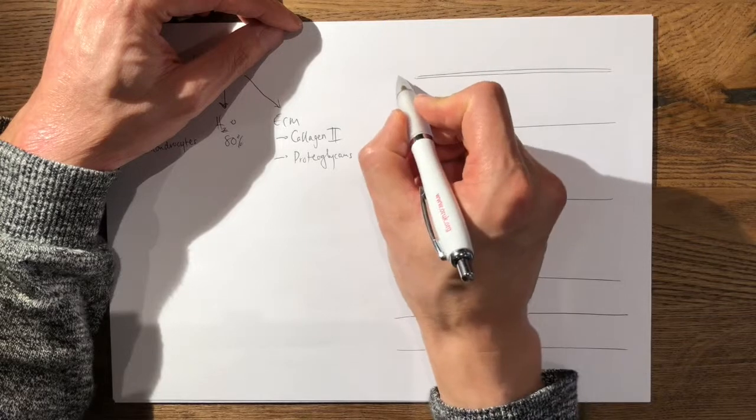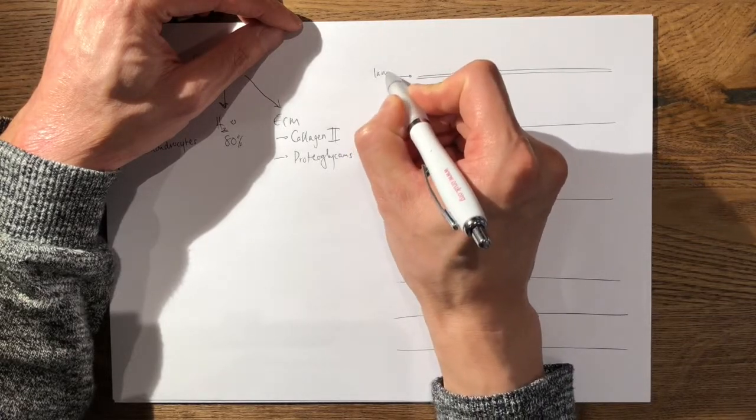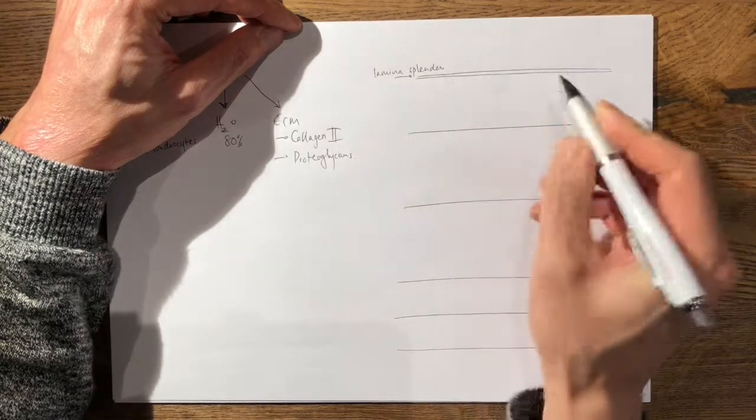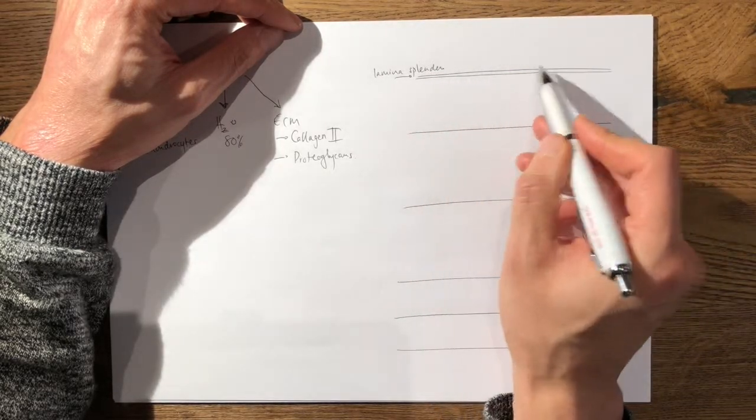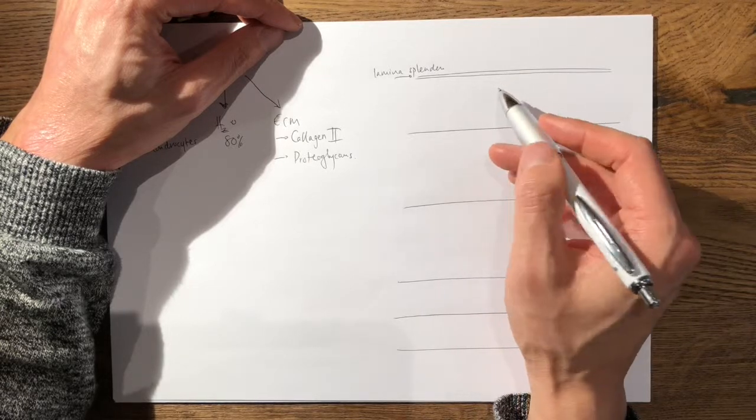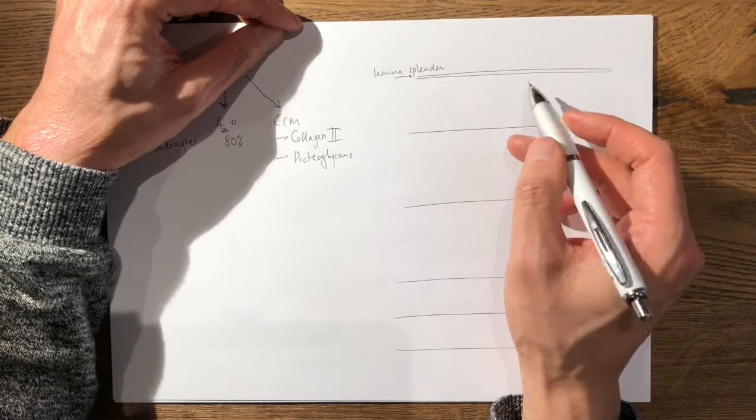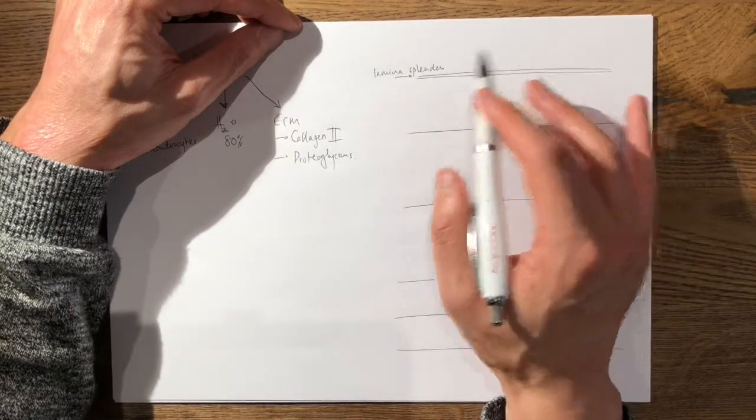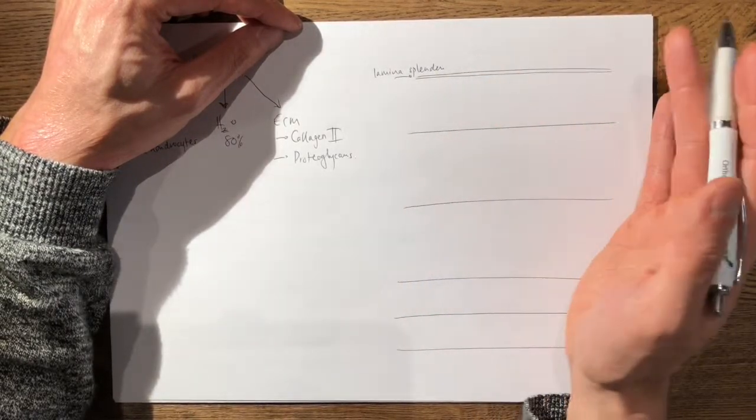So the very superficial layer is called the lamina splendens. And this is an acellular layer, and is really composed of a clear film of small collagen fibrils, but does not contain any cells, and is the very surface layer of the articular cartilage.